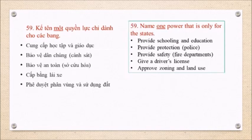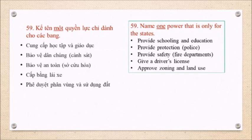Question 59: Name one power that is only for the states. Provide schooling and education. Provide protection — police. Provide safety — fire departments. Give a driver's license. Approve zoning and land use.